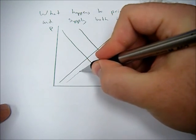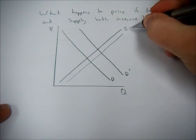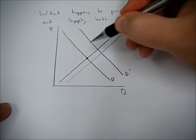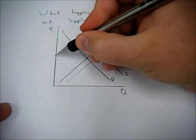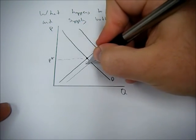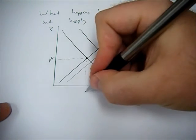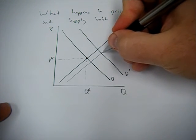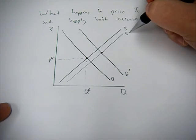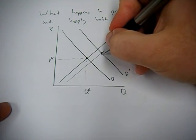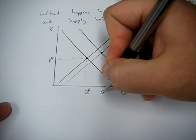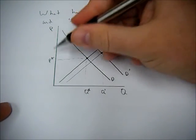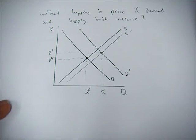So first, what happens if I only shift supply that much? Our original intersection was here. We'll call that P star, our equilibrium price, our equilibrium quantity. Our new equilibrium is going to occur here with our new supply curve and our new demand curve. We see that equilibrium quantity has gone up and equilibrium price has gone up.